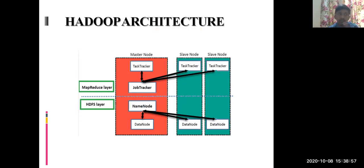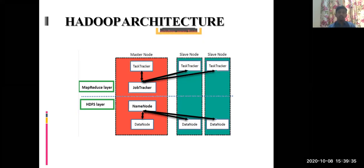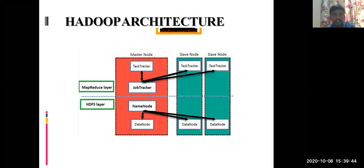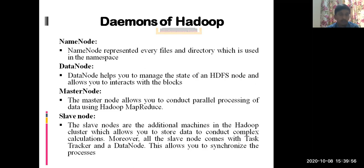If the NameNode is not in a position to handle something, it immediately gives rights to the Secondary NameNode. That is how data stored and processed will not have any breakage at any time. Hadoop is very efficient because there is a backup machine that always monitors the NameNode. If there is a problem with the NameNode, the Secondary NameNode is activated.